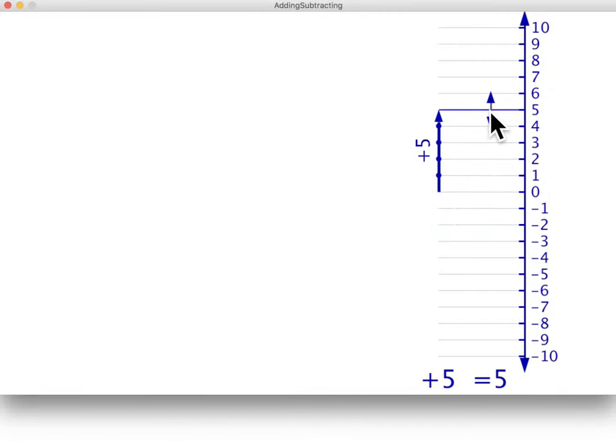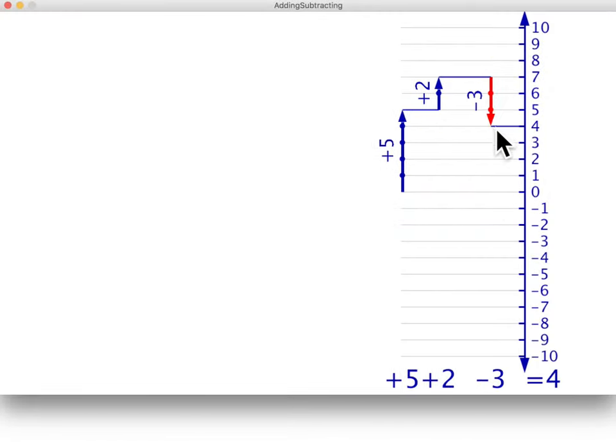That takes care of adding negative steps, but what about subtracting them? Consider the equation five plus two minus four equals three.